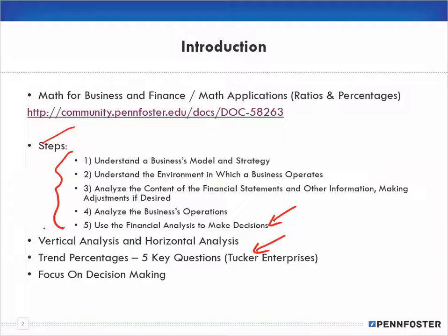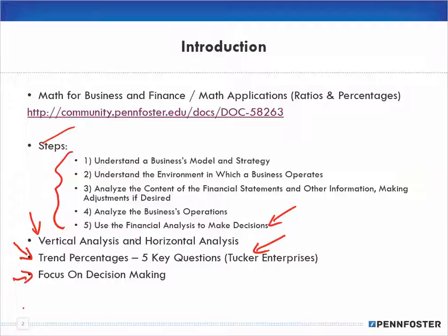Number five is going to be closely related to trend percentages and five key questions. The chapter covers vertical analysis and horizontal analysis — I'll cover that in the next video, which will be very short. Then in a separate video I'll cover trend percentages and the five key questions to ask when looking at those percentages to understand what they mean. I'm not sure if I'll make a separate video for focus on decision-making or include it with trend percentages.